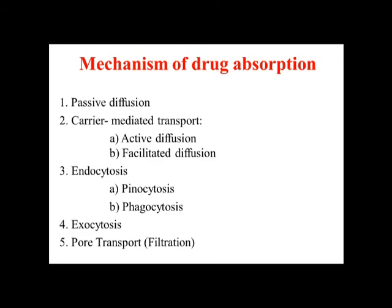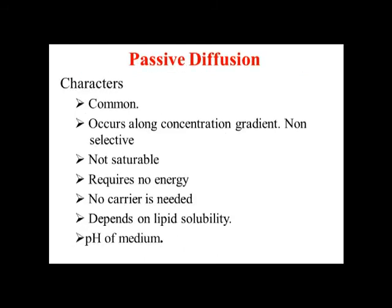There are various processes that bring about drug absorption: passive diffusion, carrier-mediated transport (which includes active diffusion and facilitated diffusion), endocytosis (including pinocytosis and phagocytosis), exocytosis, and pore transport. These five processes make up the mechanisms of drug absorption.